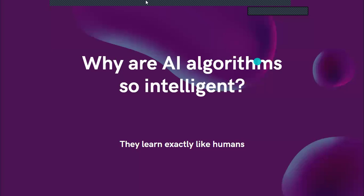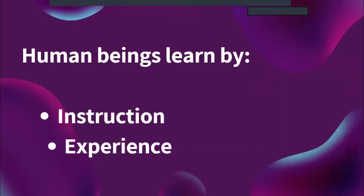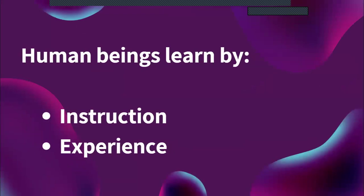We're going to play a little game using ourselves — about 20 people on this call — to understand how AI algorithms work and how they become so intelligent. AI actually learns the way we do — exactly like humans. Human beings learn in two ways: by instruction and by experience.